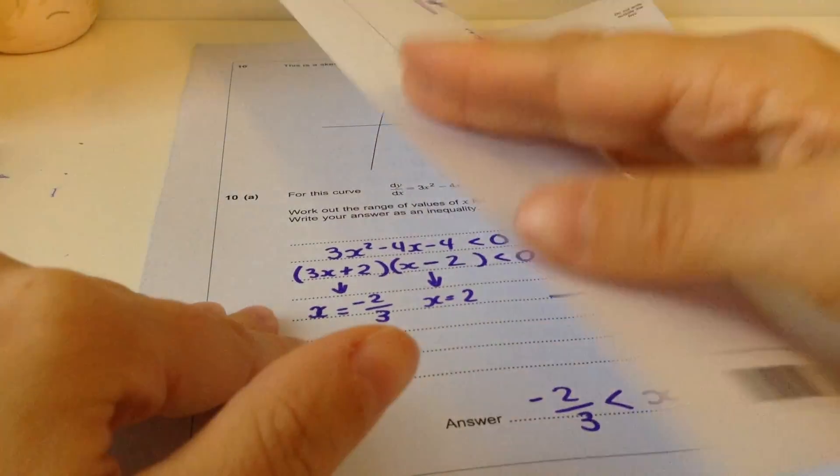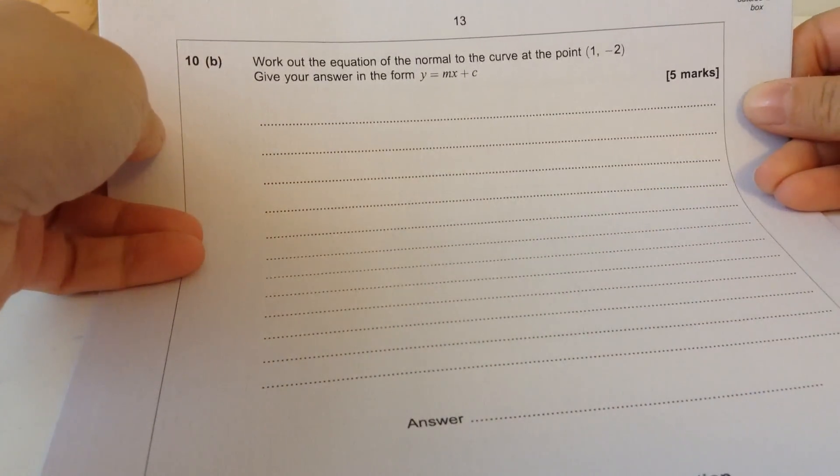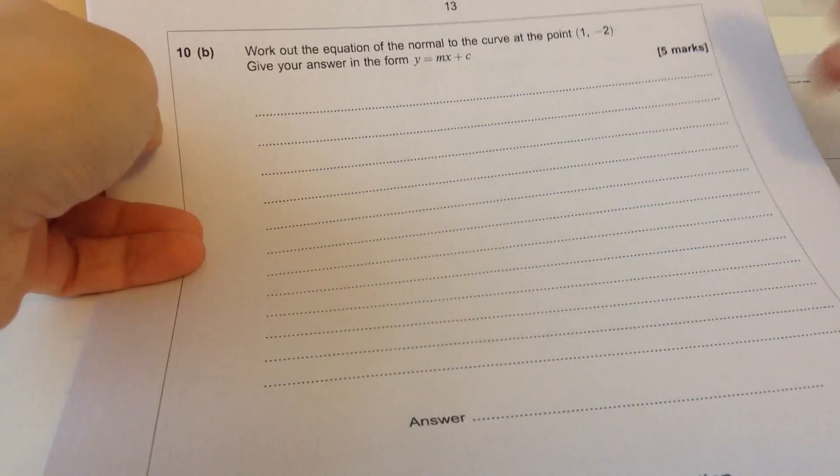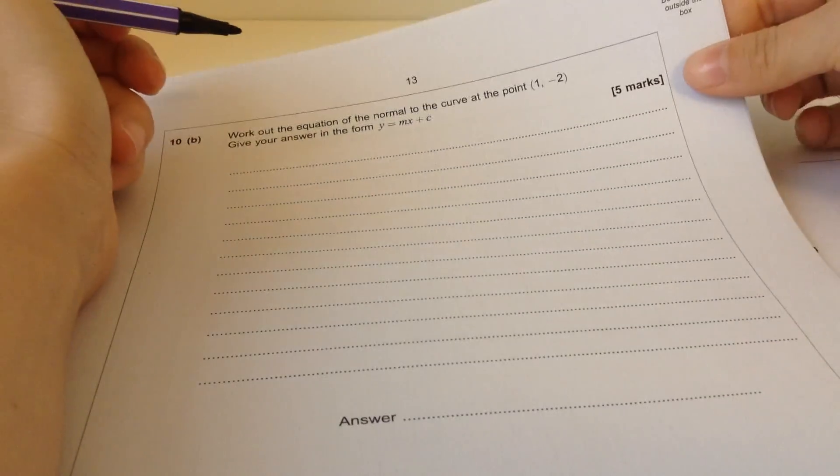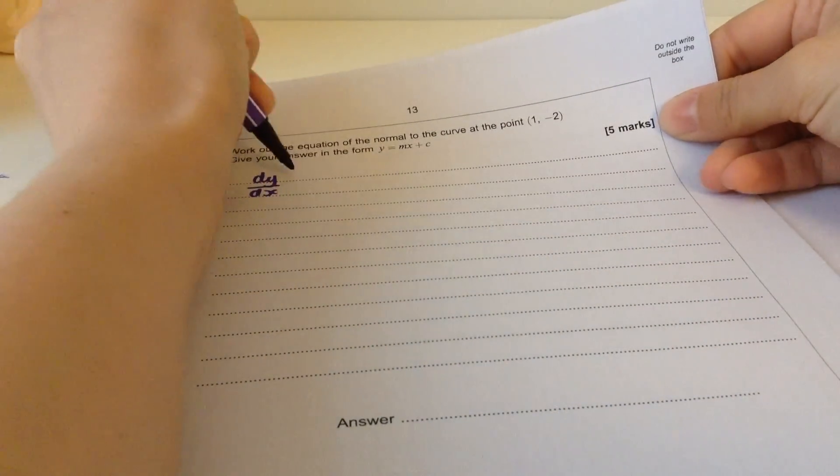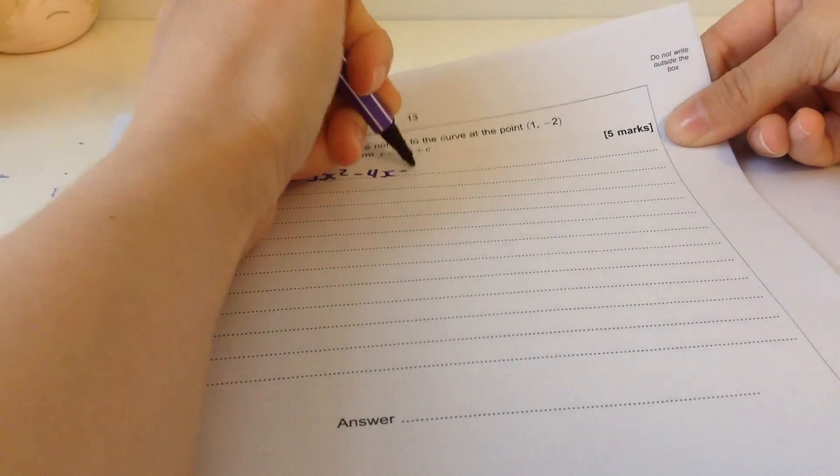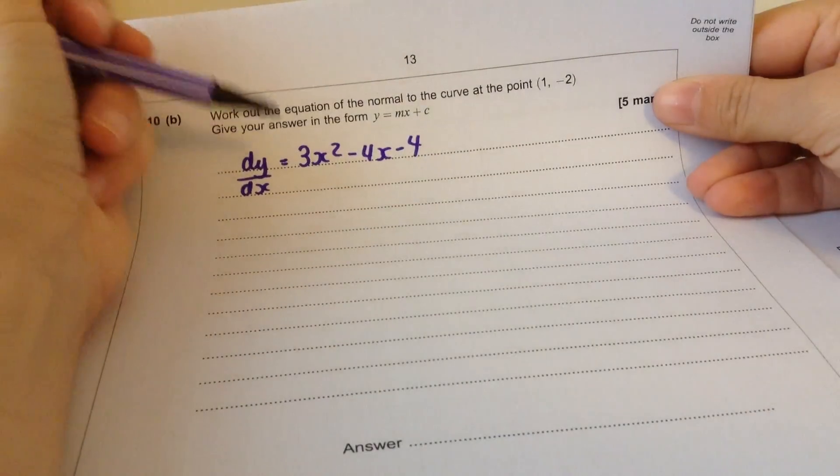That was part A, there is a part B. Work out the equation of the normal to the curve at the point 1, -2, to give your answer in that form. Let me write out dy by dx again.